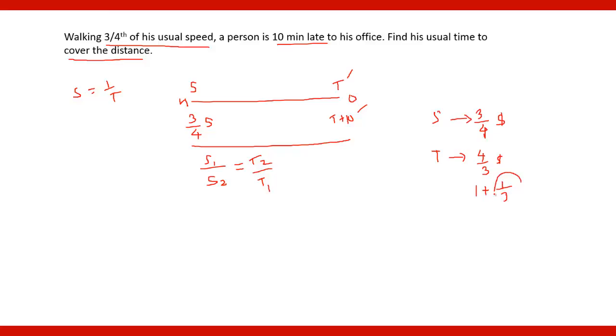And so this 1 by 3 is the additional time that is 10 minutes. Since 1 by 3 equals 10 minutes, what will be complete 1? That 1 will be equal to 30 minutes. Therefore the usual time is 30 minutes.